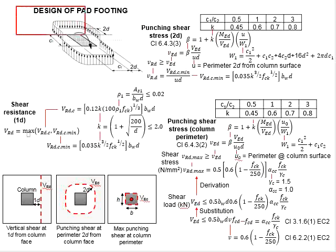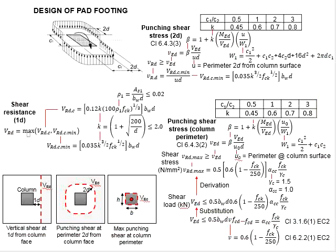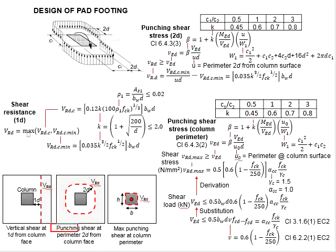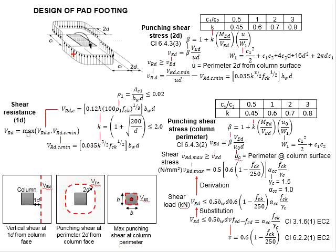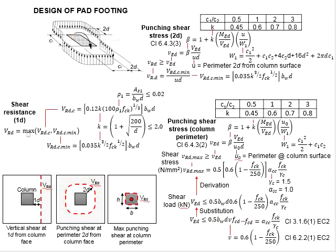Next, you need to design for the shear resistance of the pad foundations. There are two types of shear resistance: the vertical shear at 1d from the column face, and the punching shear at the perimeter 2d from the column face, as well as the punching shear at the column perimeter. We shall look into these one by one, starting with the vertical shear at the shear plane of 1d from the column face.